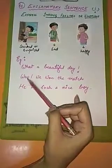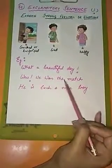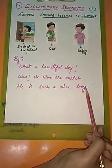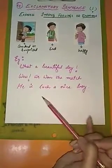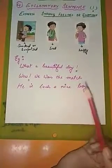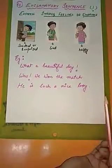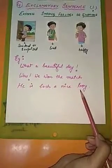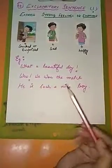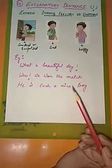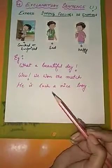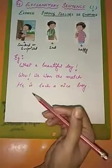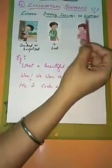Next we see: wow! A sudden expression with an exclamation mark. We won the match. Next is: he is such a nice boy. So here we see that we are expressing our emotions after having a very good day, after meeting such a nice boy, or after winning the match. Here we are expressing our sorrow or regret, or expressing that we are very happy by saying hooray! So exclamatory sentences are used for strong feelings or emotions.